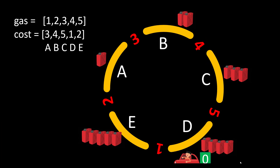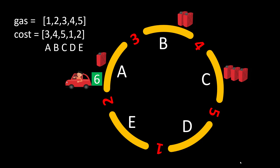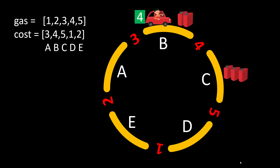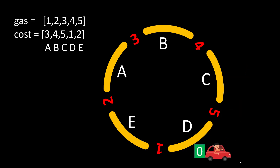The answer to this problem is that we start from point d, or index 3. Starting from index d, we fill our tank with the fuel at d and take the car to point e using one unit of fuel. We refuel at e and move to a using two units of fuel. We refuel again and move to b using three units of fuel. Refueling again, we move to c using four units of fuel, then fill up to three units. Finally, we move back to d with no fuel remaining at the end. We were able to move through the whole circuit without ever running into a condition where we lacked enough fuel.